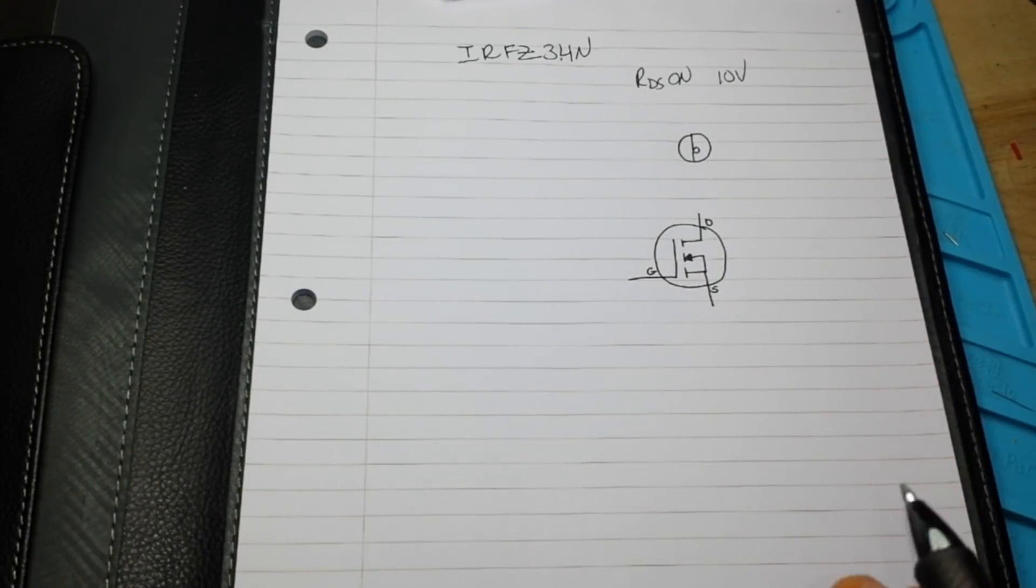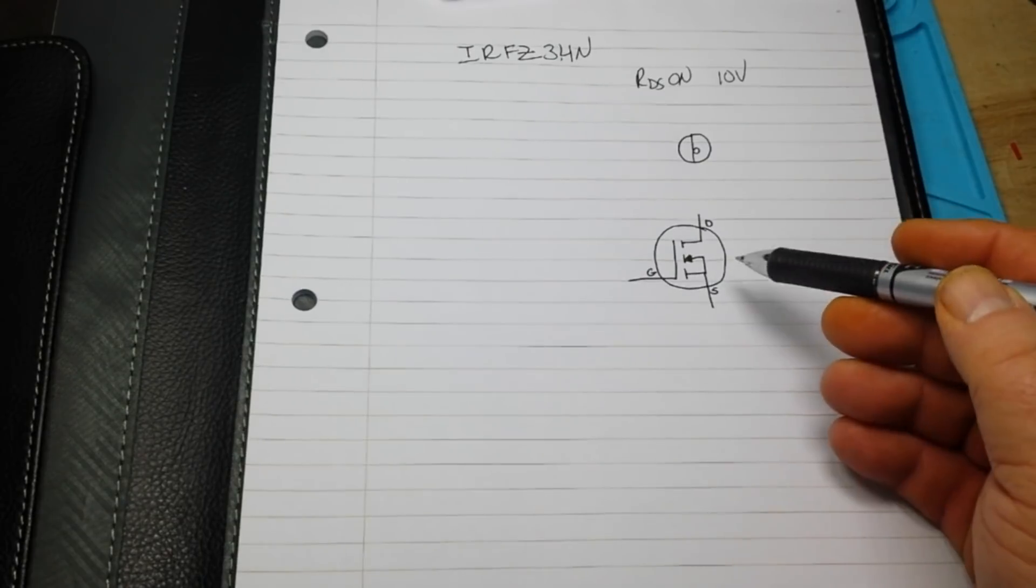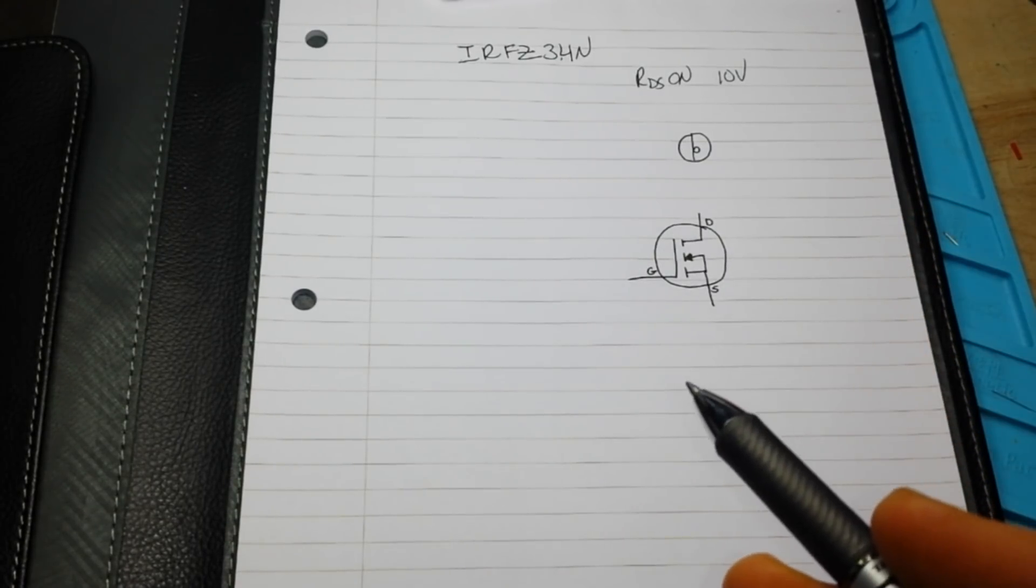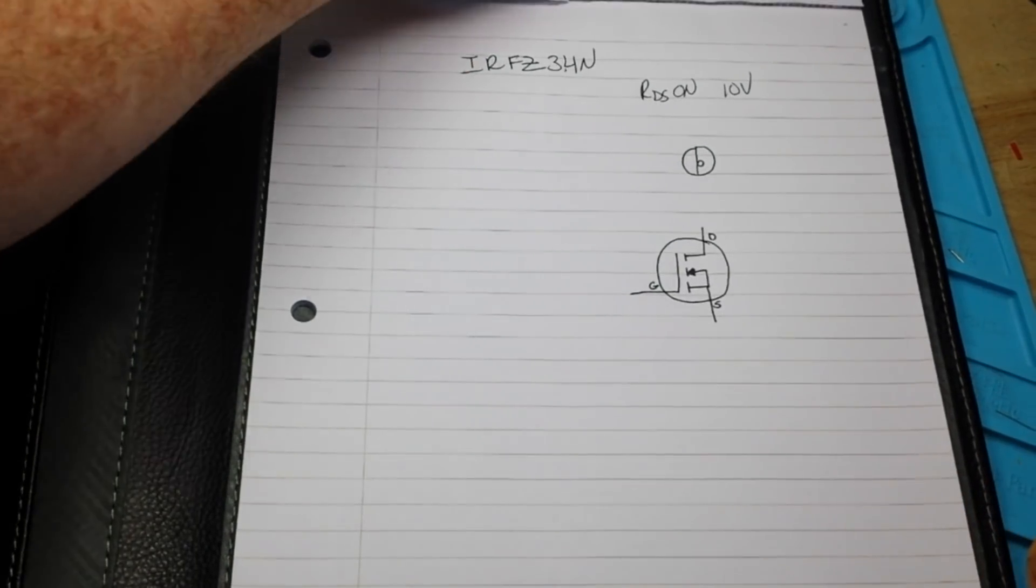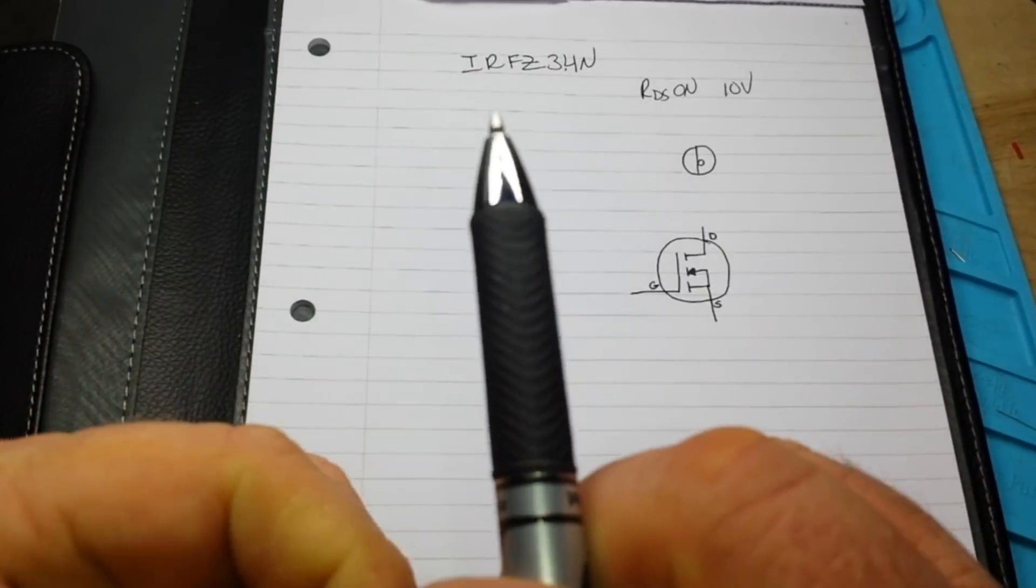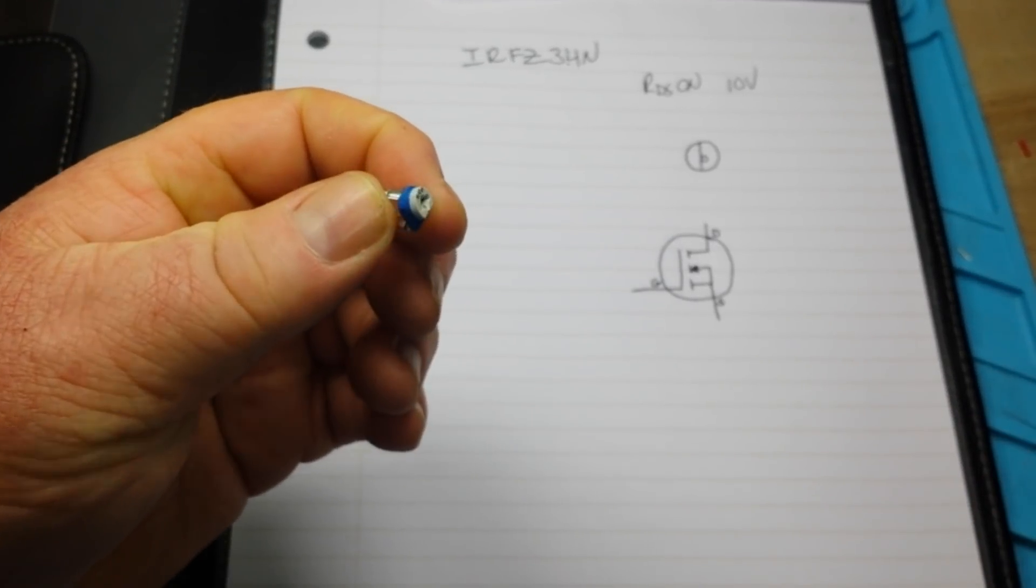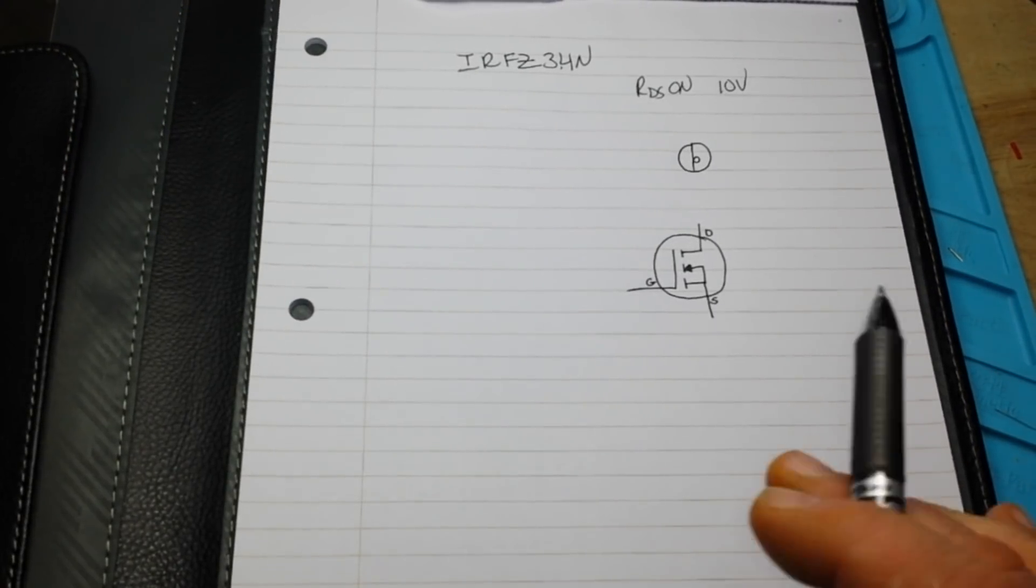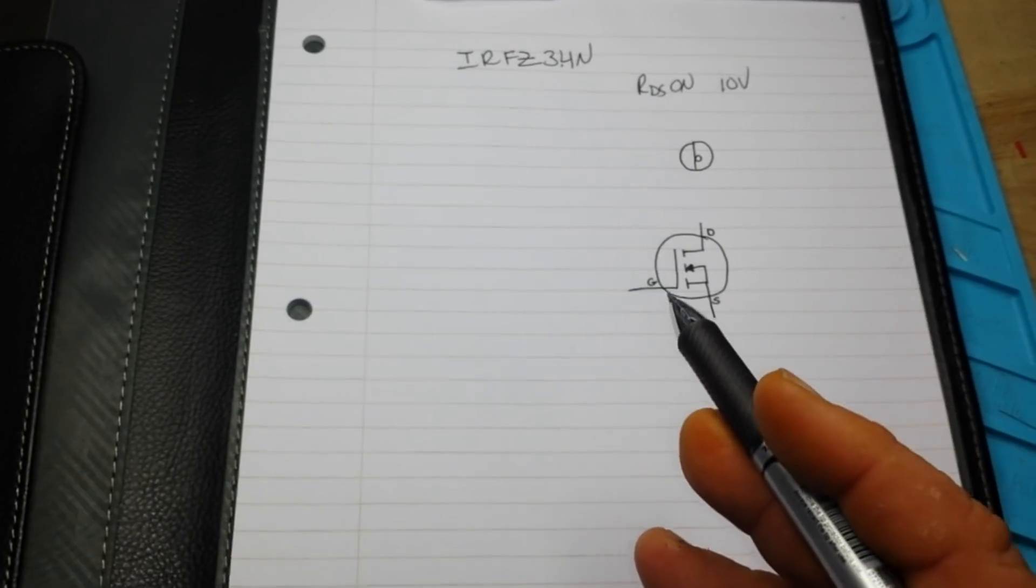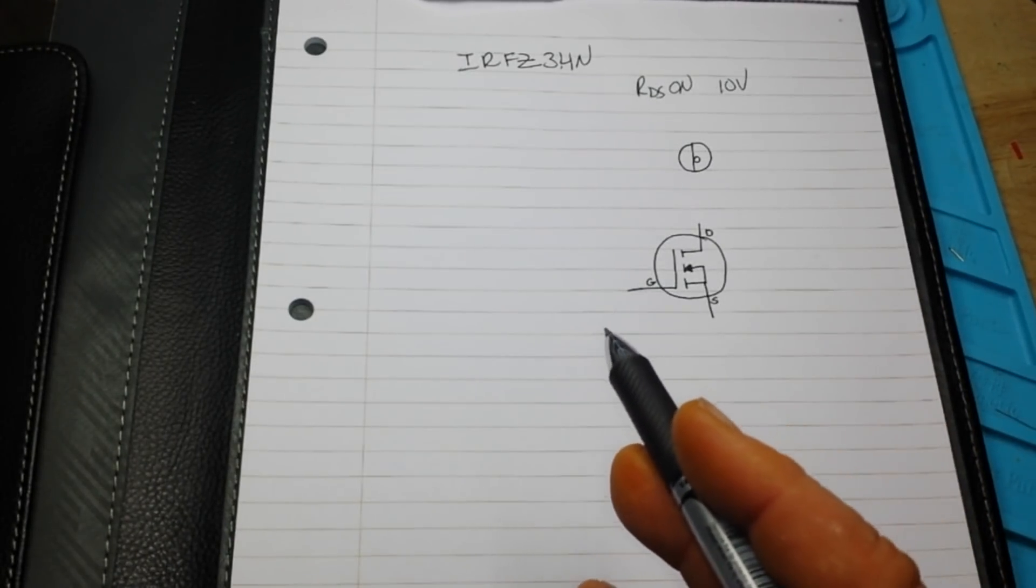But what I want to show you is a way that you can use a MOSFET as kind of a variable resistor to offload your current handling capabilities if all you've got on hand are little trimmer pots, they don't handle too much current and you need to handle a little bit more current. Well you can offload the work to a MOSFET and it will work out just fine.